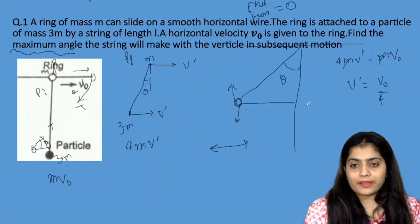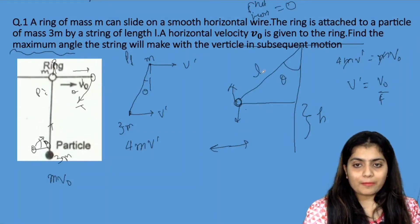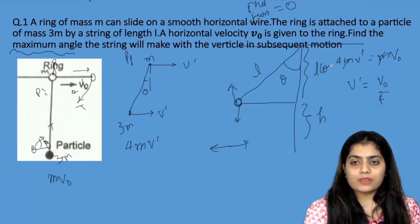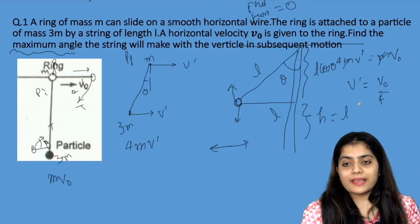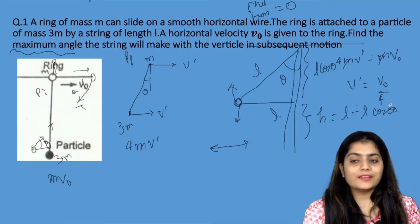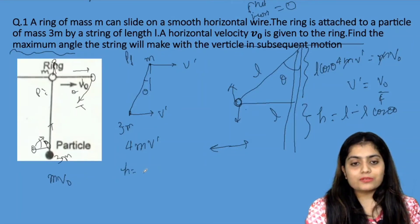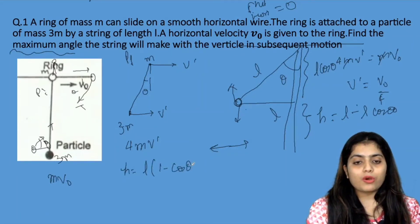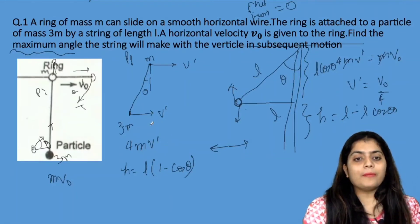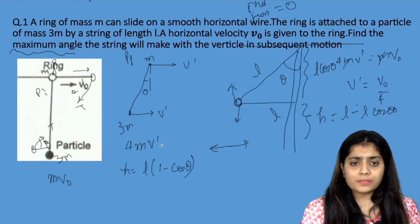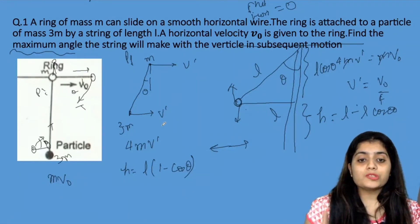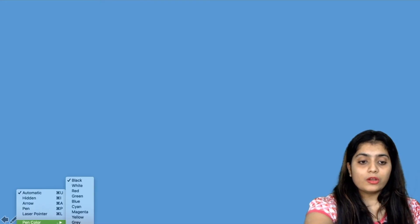Now, how high does the particle rise? The height is H, the string length is L, and the vertical component is L·cosθ. So the height H equals L minus L·cosθ, which is L(1 - cosθ). We will use the work-energy theorem to find theta, and we know the height is L(1 - cosθ).